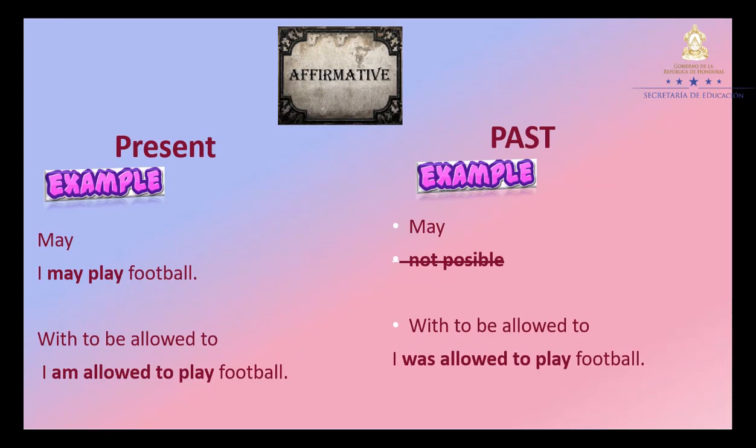Affirmative sentence in the present with may: 'I may play football.' With 'to be allowed to': 'I am allowed to play football.' In the past, 'may' does not have a past form. So if you want this sentence in the past, you use 'to be allowed to': 'I was allowed to play football.' Repeat: I may play football. I am allowed to play football. I was allowed to play football. Good job.